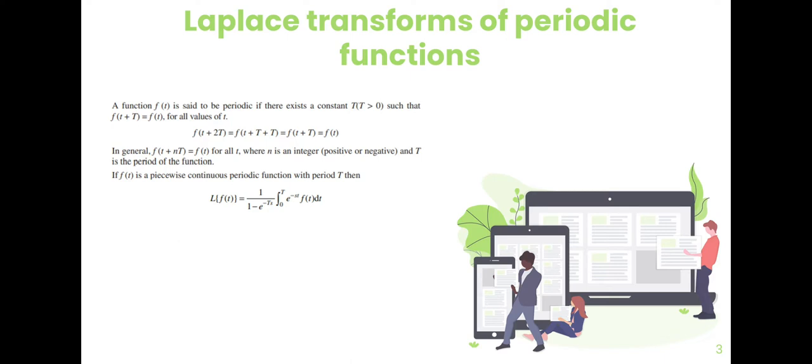A function f(t) is said to be periodic if there exists a constant T such that f(t + T) is equal to f(t). Capital T is the period. For any integer n, the function value changes accordingly.